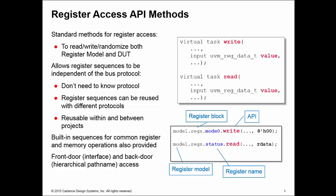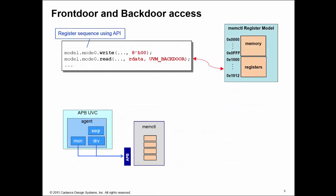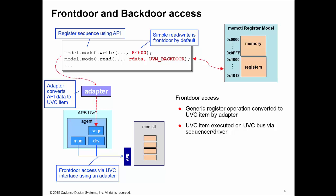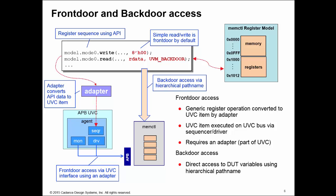These sequences come in two forms: front door access and back door access. For front door access - which is the default - a read or write operation creates a generic register operation that needs to be converted to the transaction item used by your UVC. There must be an adapter to do this. The adapter converts the generic register operation into a specific UVC transaction item, passes it down to the sequencer, which passes it into the driver and then performs a transaction via the interface on the front door of your DUT. The adapter should come as part of your UVC, so the UVC developer should write the register adapter.